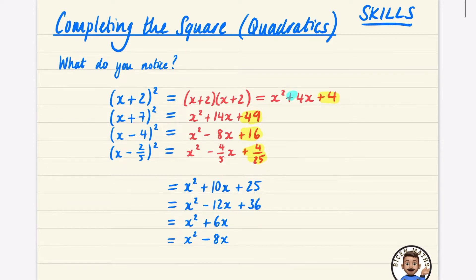The middle terms follow a pattern too — we can predict them from the starting bracket. The middle term is double that number multiplied by x: so 2 becomes 4x, 7 becomes 14x, negative 4 becomes negative 8x, and negative 2 over 5 becomes negative 4 over 5 x.